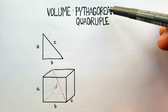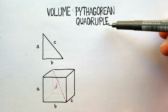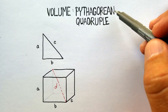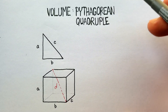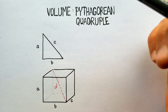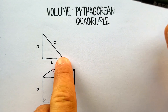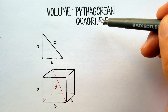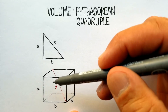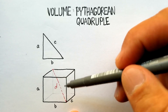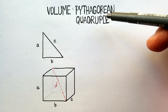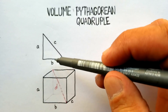In this video, we're going to talk about something called the Pythagorean Quadruple. You can tell by the name that it's based off of the Pythagorean Theorem, which works with right triangles. The Pythagorean Quadruple actually works with solid three-dimensional figures, and it's based on the diagonal — it's an extension of the Pythagorean Theorem. So it makes sense to look at the Pythagorean Theorem real quickly.